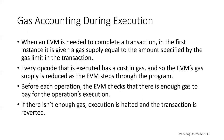Let's talk a little more about what is actually going on with the EVM during execution. The EVM is doing accounting of what's being spent in terms of gas. When the EVM needs to complete a transaction, it's given a gas supply equal to the amount specified in the transaction. Every operation code that is executed has a cost in gas, and so the EVM's gas supply is reduced as the EVM steps through the program and executes each step. Before each operation, the EVM checks if there's enough gas to pay for that operation's execution. If there isn't enough gas, execution is halted and the transaction is reverted.